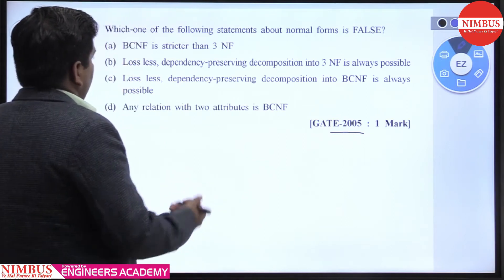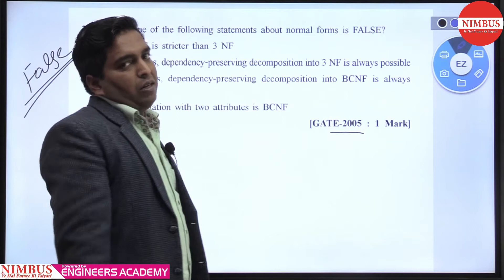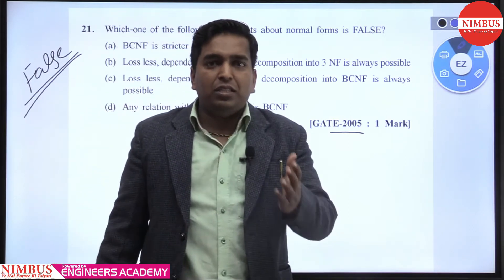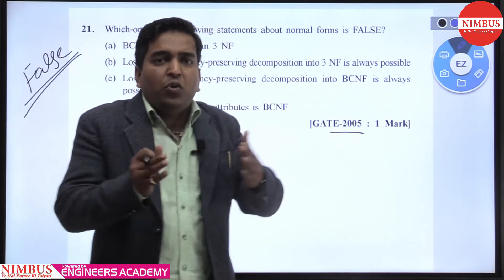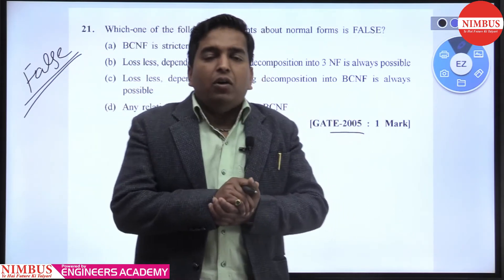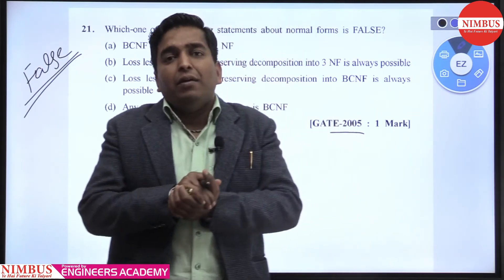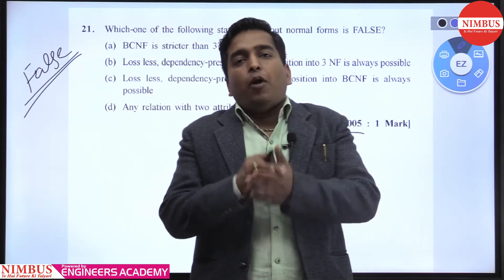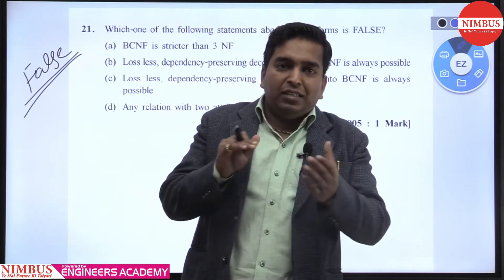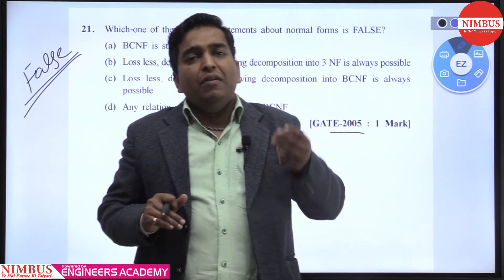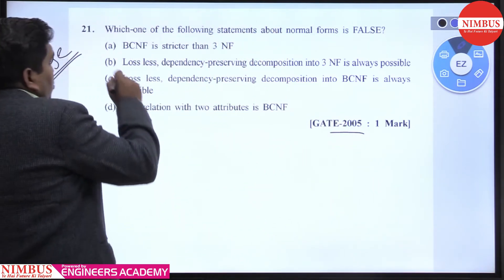The first statement is: BCNF is stronger than 3NF. Yes, definitely, because in BCNF all three cases are not allowed. Case one: a proper subset of a candidate key determining a non-key attribute — not allowed in 2NF. Case two: non-key attribute to non-key attribute — not allowed in 3NF. Case three: a proper subset of one candidate key being a proper subset of another candidate key — not allowed in BCNF. So BCNF is stricter, and this statement is not false.